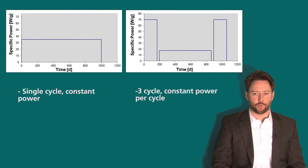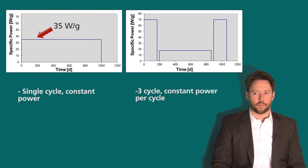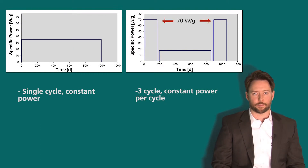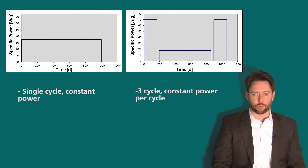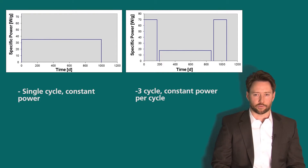On this slide we have two figures describing different irradiation histories. On the left we have a single cycle with constant power: a specific power of 35 watts per gram, irradiating for 1,000 days. The second figure shows a three-cycle constant-power-per-cycle irradiation history. The first and third cycles both have a specific power of 70 watts per gram, while the second cycle has 17.5 watts per gram, with two 20-day shutdowns inserted between each cycle. These are just examples — actual irradiation histories may be more complicated and may not be constant during an individual cycle.